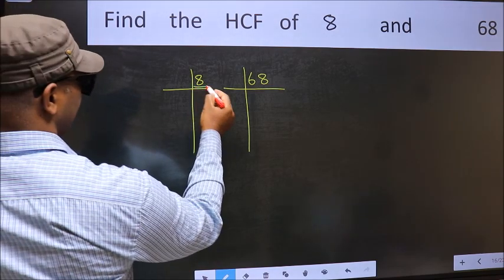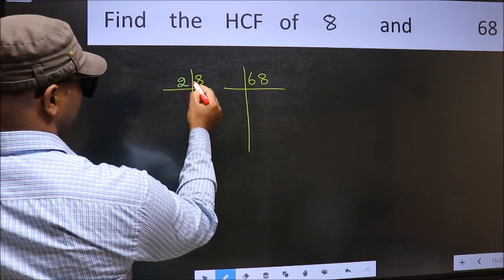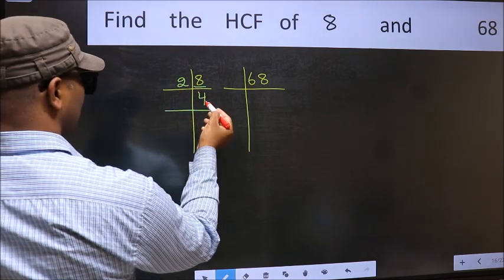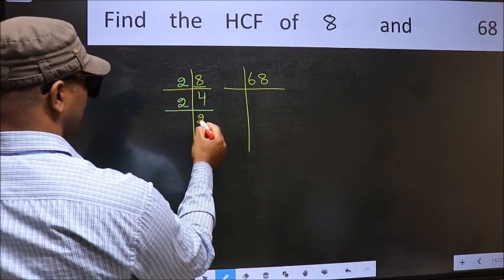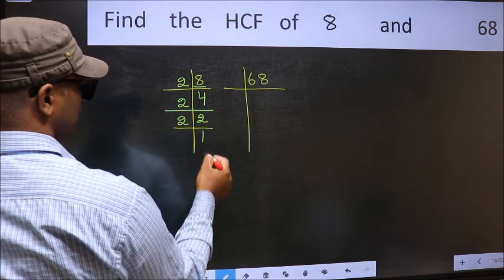Here we have 8. 8 is 2 times 4. 4 is 2 times 2. 2 is a prime number so 2 times 1 is 2.